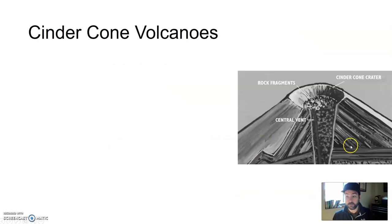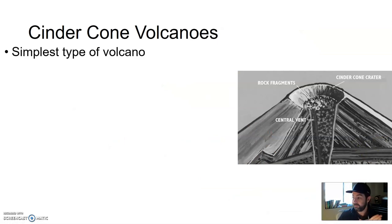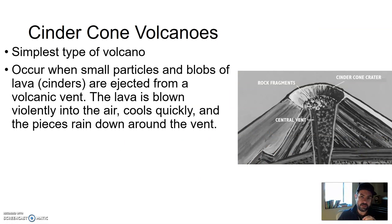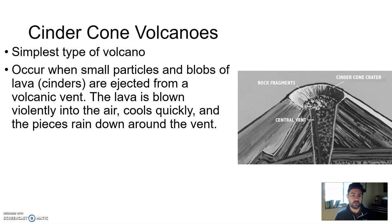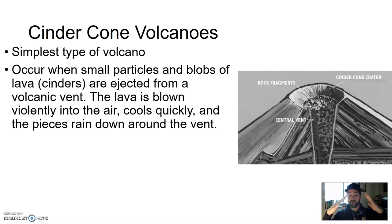First up is a cinder cone volcano. It is the simplest type of volcano. These types of volcanoes occur when small particles and blobs of lava — tephra known as cinders, lapilli-sized — are ejected from a volcanic vent. The lava is blown very violently and quickly into the air. There's a lot of gas pressure behind it, so it cools very quickly and the tiny cinders, or lapilli, rain down all around the vent. These cinders build up very quickly and form this very cone-shaped volcano.